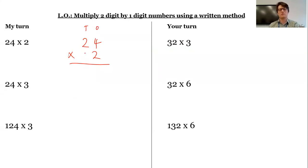2 times 4, well, 2 lots of 4 is 8. And then 2 times 2 is 4.